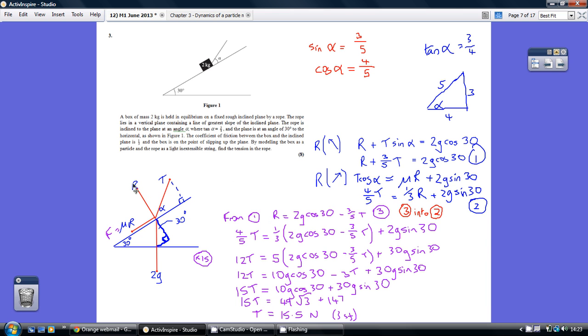so we've got R plus T sin alpha, so R plus this, equaling, going the other way down here, 2G cos 30, adjacent cos 30, so that's this. A sin alpha, given that tan alpha is 3 over 4, is 3 over 5, so that's our first equation with two unknowns, R and T.